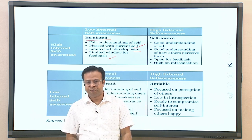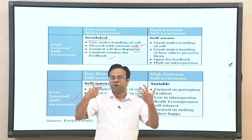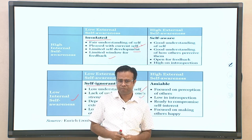The second pattern — low internal and low external self-awareness — is termed 'self-ignorant.' Such individuals have low understanding of themselves, lack awareness of their own strengths and weaknesses, depend on external assurance, and have low understanding of how others perceive them. There is a general ignorance about how to interact with others and what they themselves stand for.